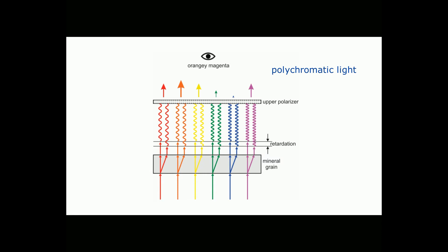If we rotate the stage, the relative intensities of the slow rays and fast rays will change, but they're going to change differently for each wavelength. So the interference colors will change. But every 90 degrees the grain will go extinct, and at 45 degrees to the extinction angles, we will see the maximum interference colors possible.